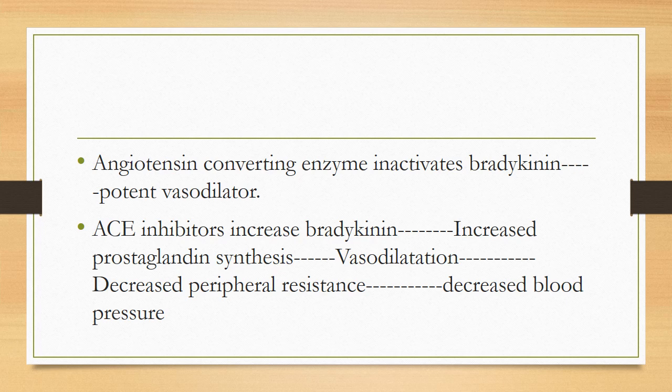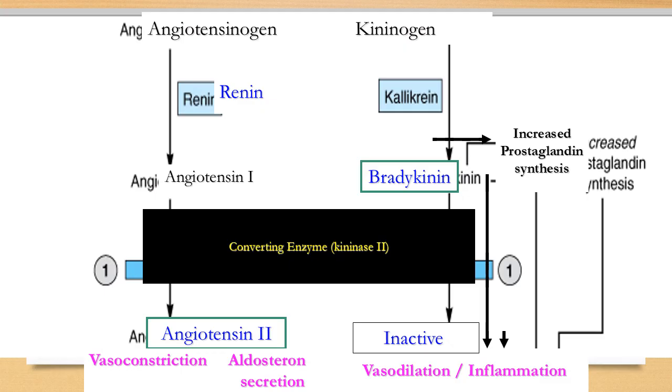ACE inhibitors increase the level of bradykinin, which leads to increased prostaglandin synthesis. This increase in prostaglandin synthesis leads to increased vasodilation, and due to increased vasodilation there will be decreased peripheral vascular resistance and decreased blood pressure.